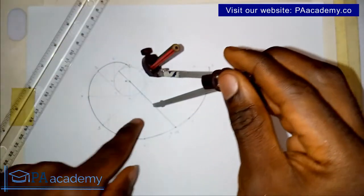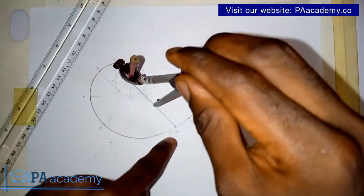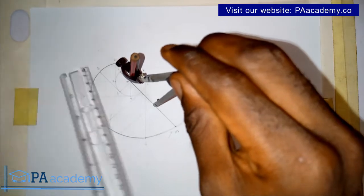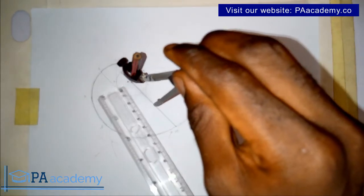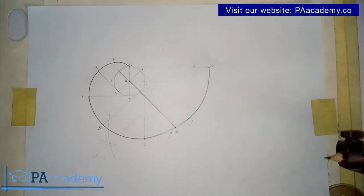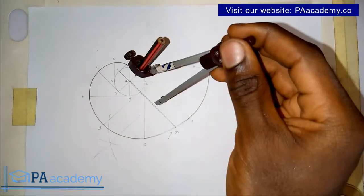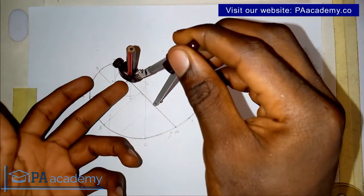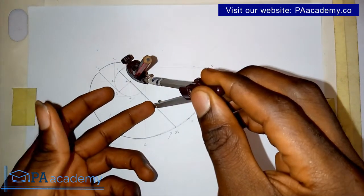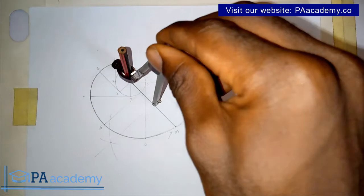I place my compass directly on the center and adjust it to reach point O or point M. You can also pick your ruler, measure the distance, then set your compass accordingly — whichever way is convenient. Once I have the length from the center to point O, I go ahead and draw the semicircle.